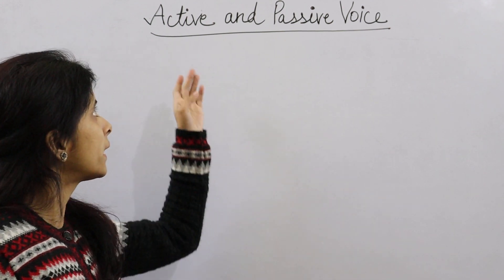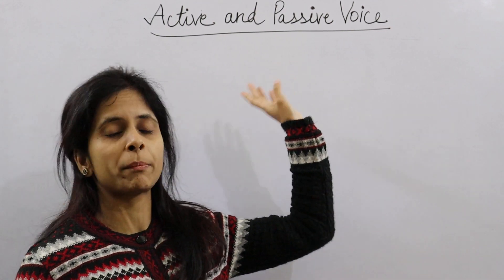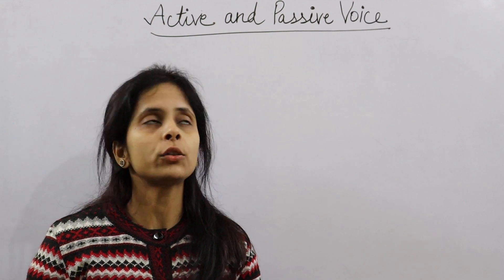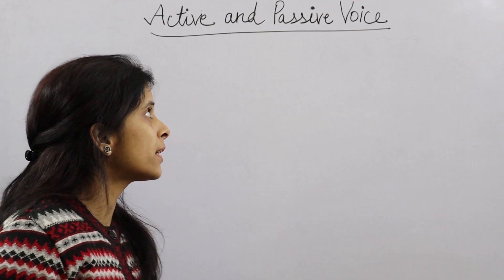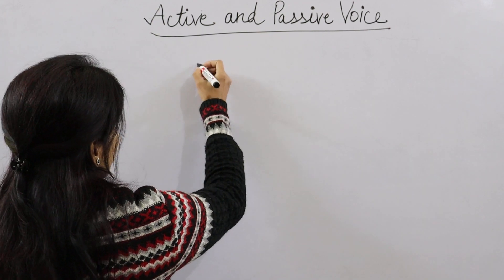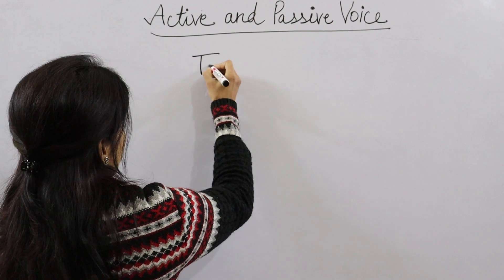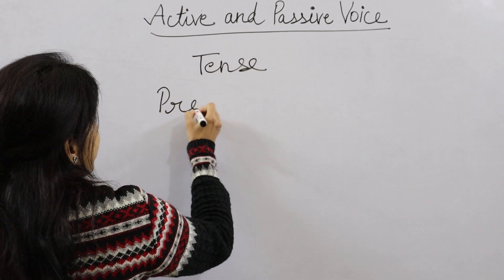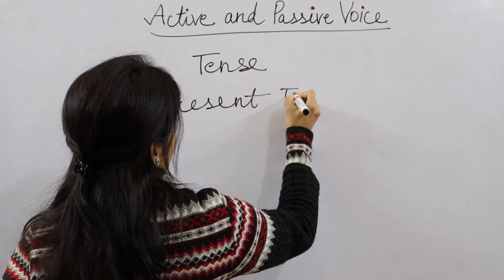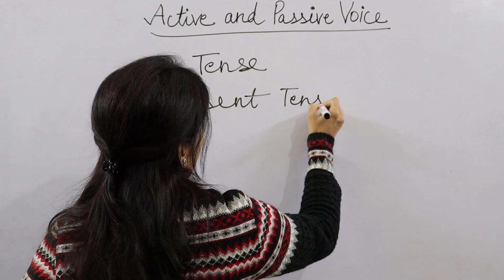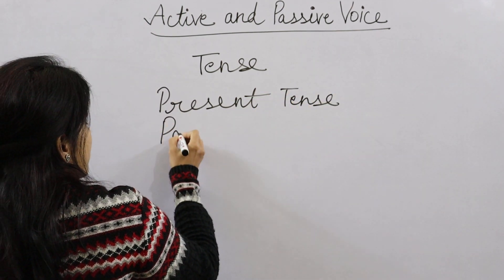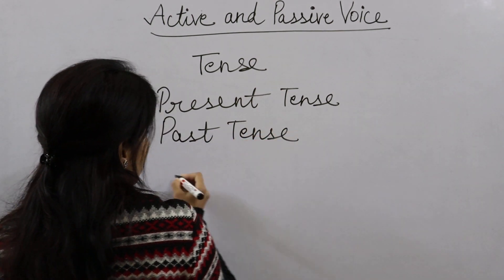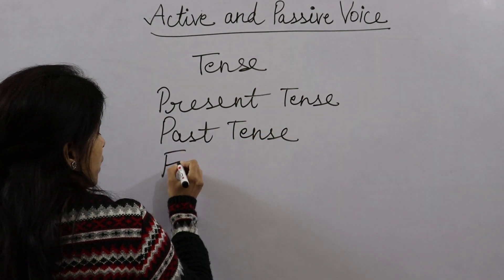We will go directly to the point. So first of all, how many types of tenses are there? The first tense is present tense, the second is past tense, and the third is future tense.